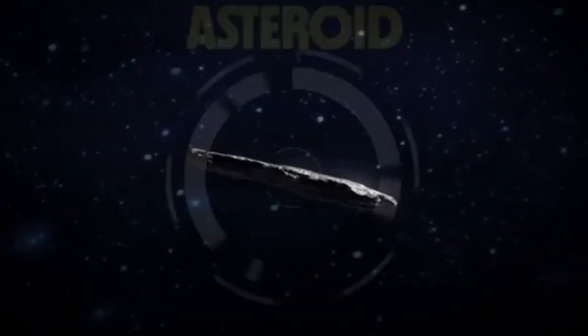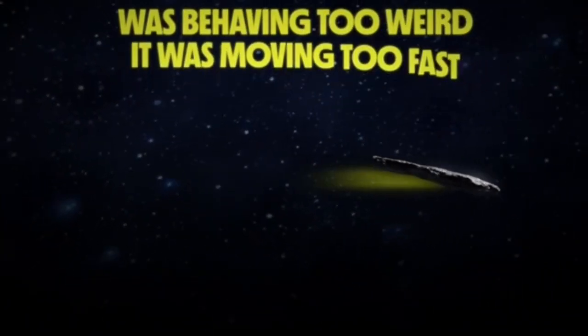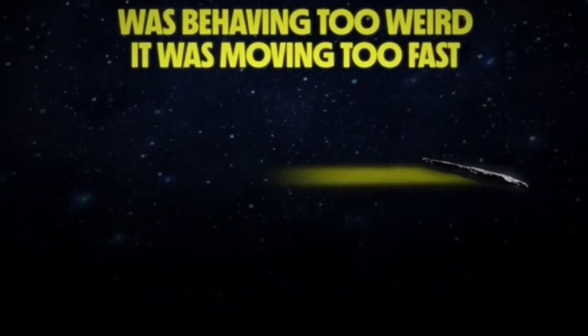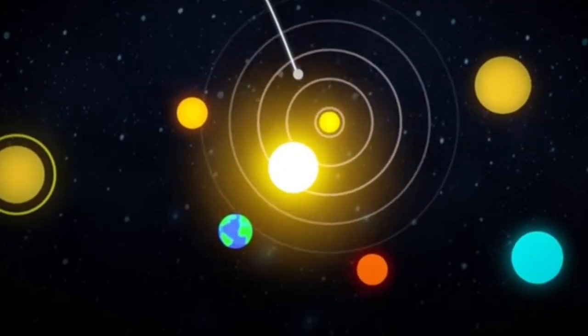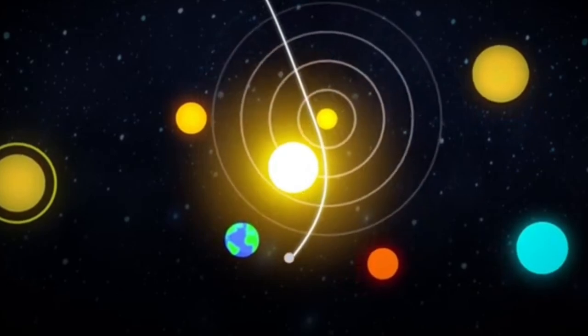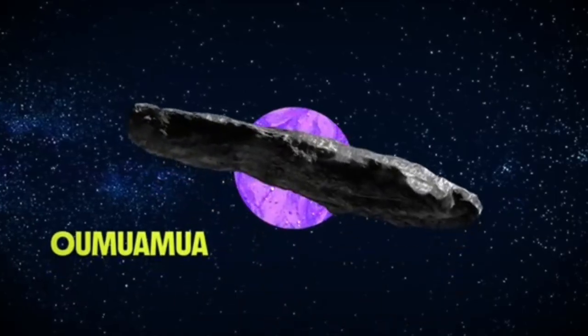That depends on how close you are to the sun, but from the Earth, escape velocity would be about 42 kilometers per second. When we first spotted Oumuamua as it passed beyond Earth's orbit on its way out of the solar system, it was moving at 87 kilometers per second, way too fast to be caught by the sun's gravity.